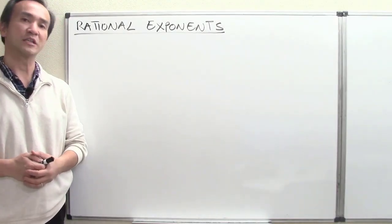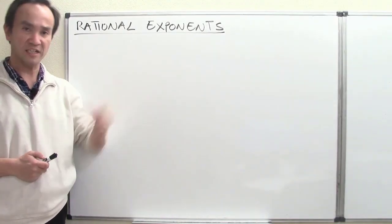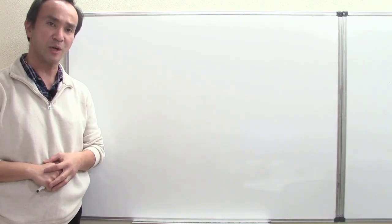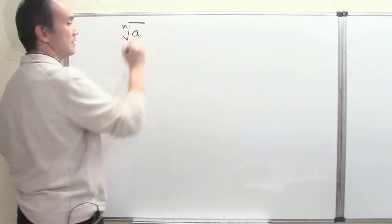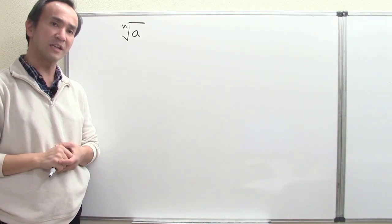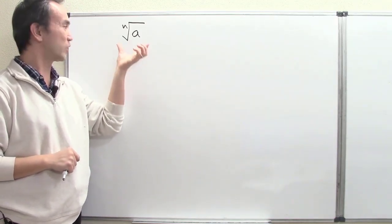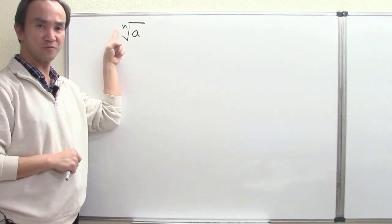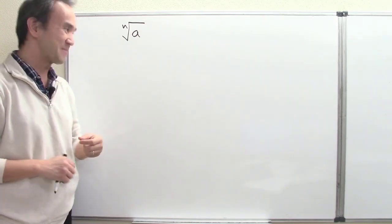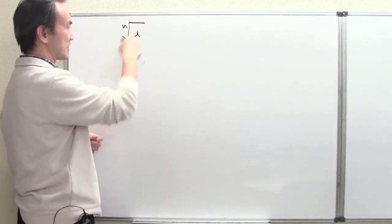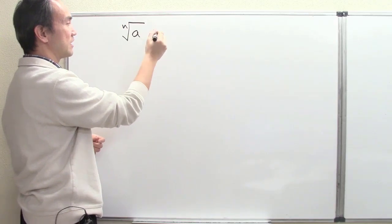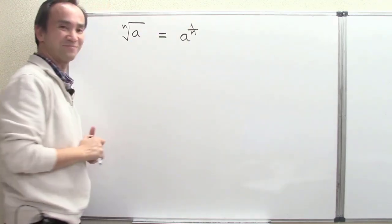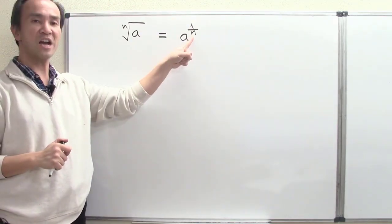In this video lesson, we are going to learn about rational exponents. Anyone viewing up to this point is well familiar with what an nth root of a number a is — for some n value, with the root order being 2 or higher. The idea of rational exponents is that starting from this nth root, it is now understood as a being raised to the 1 over n power. And this is a rational exponent.